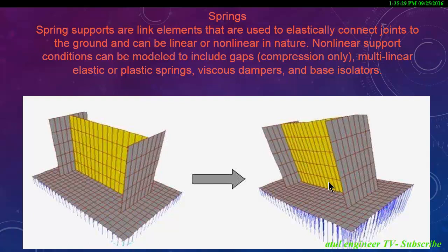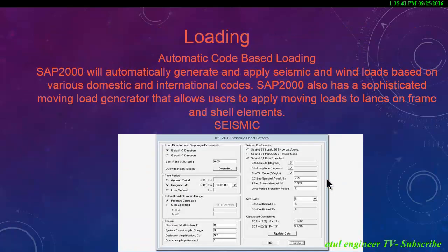Spring supports are linked elements used to elastically connect joints to the ground, and can be linear or nonlinear in nature. Nonlinear support conditions can be modeled to include caps, compression-only, multi-linear elastic or plastic springs, viscous dampers and base isolators.